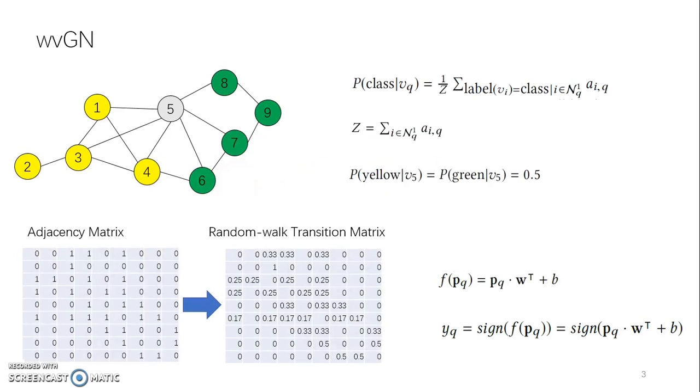For the example network, vertices 1 to 4 belong to the yellow class, and vertices 6 to 9 belong to the green class, so which class does vertex 5 belong to?